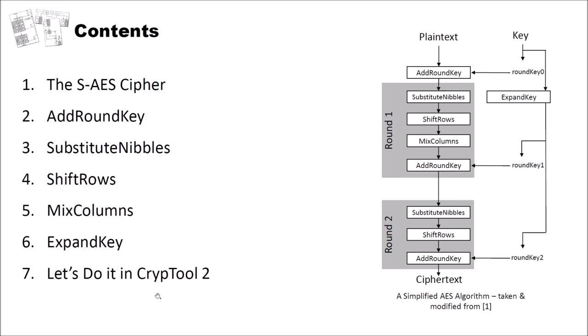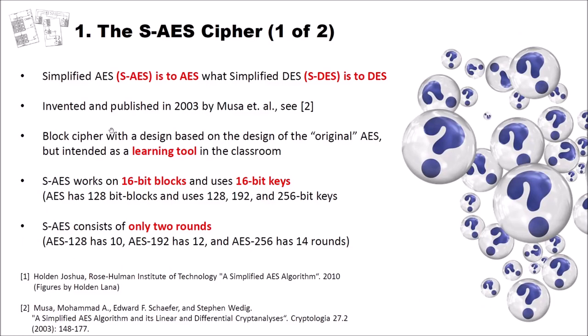Simplified AES, abbreviated SAES, is to the AES cipher what the Simplified DES is to the DES cipher. The SDES, the Simplified DES, we also have an implementation in CrypTool 2. So if you are interested in the Simplified DES, have a look at it — we already had a video on this channel about SDES. SAES was invented and published in 2003 by Musa et al. I have two references here — a really interesting paper about how the cipher works. I suggest you use these two publications if you want to implement SAES on your own, which I highly recommend, since implementing these easy ciphers really helps you understand them.